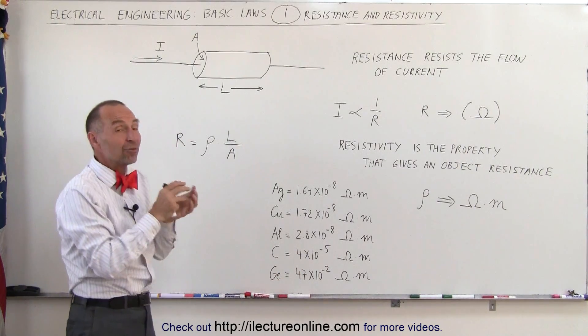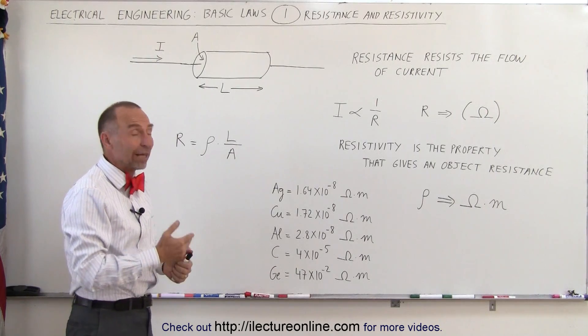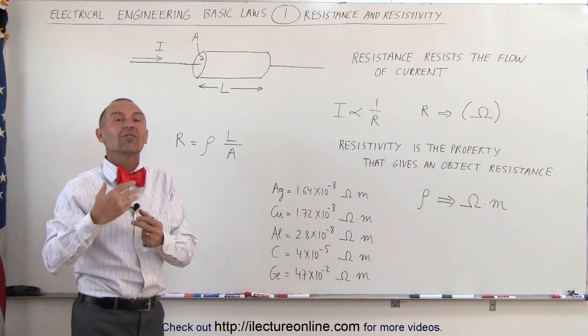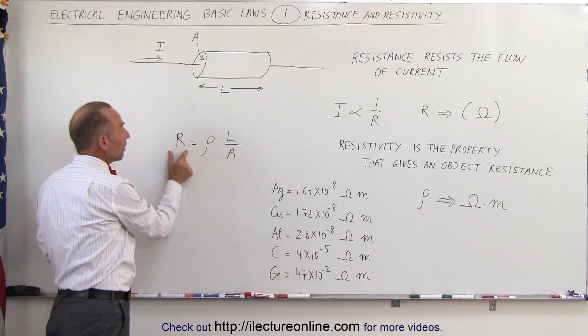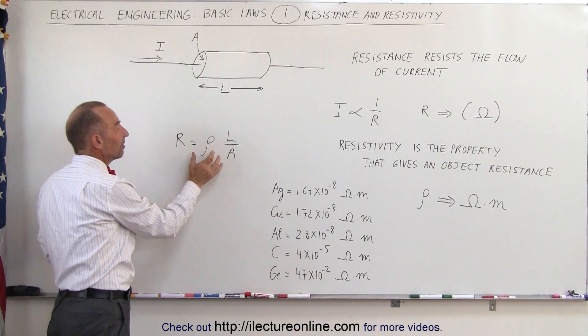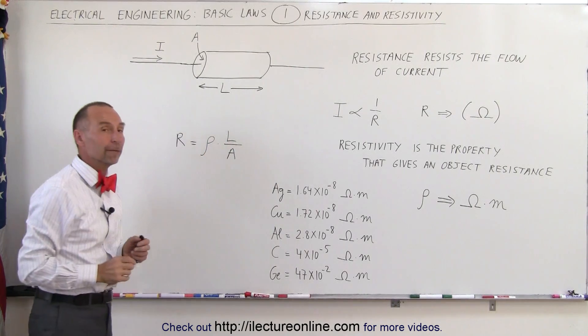Resistivity is the property that an object has that gives it the ability to have resistance. The greater the resistivity, the more resistance the object will have. The equation to calculate the resistance of an object is equal to the resistivity times the length divided by the cross-sectional area.